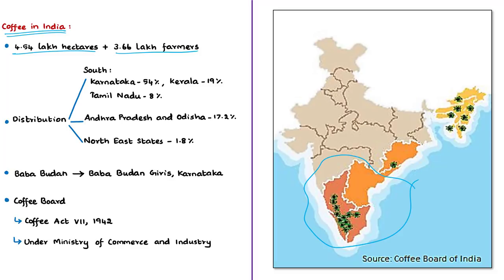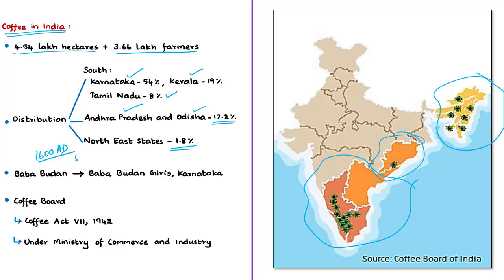Karnataka accounts for 54 percent of coffee produced in India, Kerala for 19 percent, and Tamil Nadu for 8 percent. Coffee is also grown in non-traditional areas like Andhra Pradesh and Odisha (17.2 percent) and northeastern states (1.8 percent). Coffee was introduced in India during 1600 A.D. by a legendary holy saint known as Baba Budhan. The place where he planted coffee seeds is now called Baba Budhan Giris — a mountain in the Western Ghats of Karnataka. Commercial plantations were started by British entrepreneurs during the 18th century.